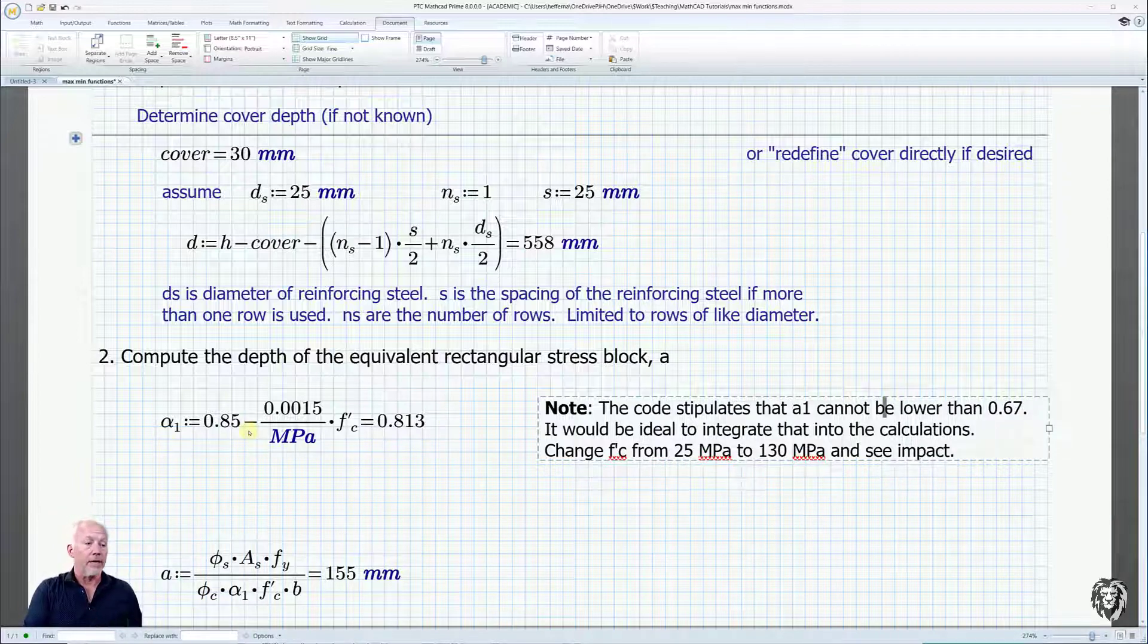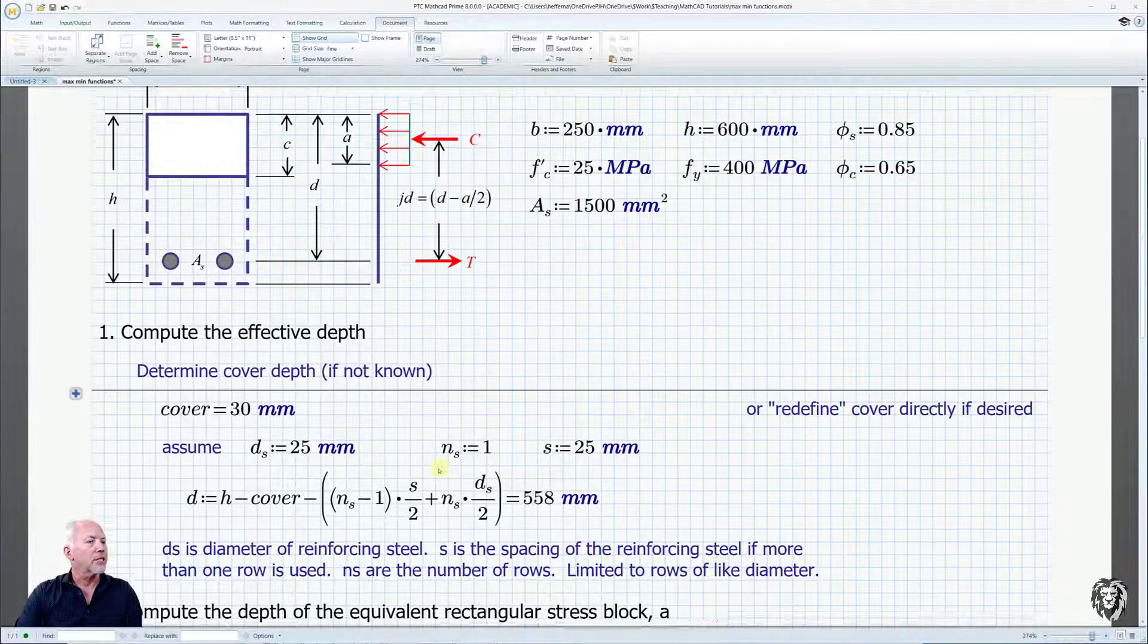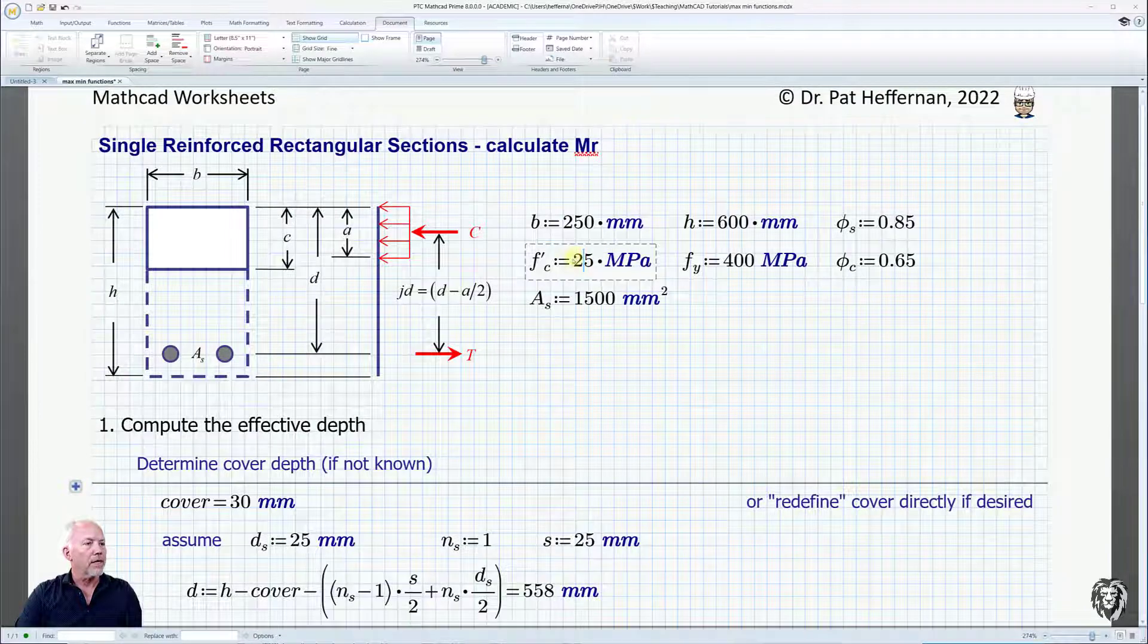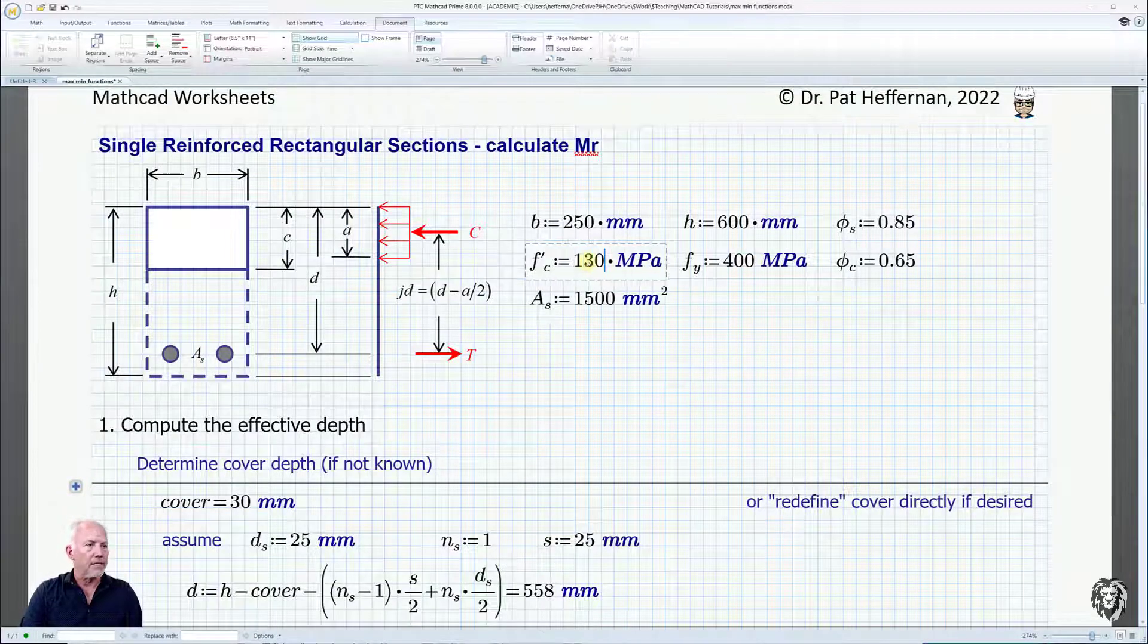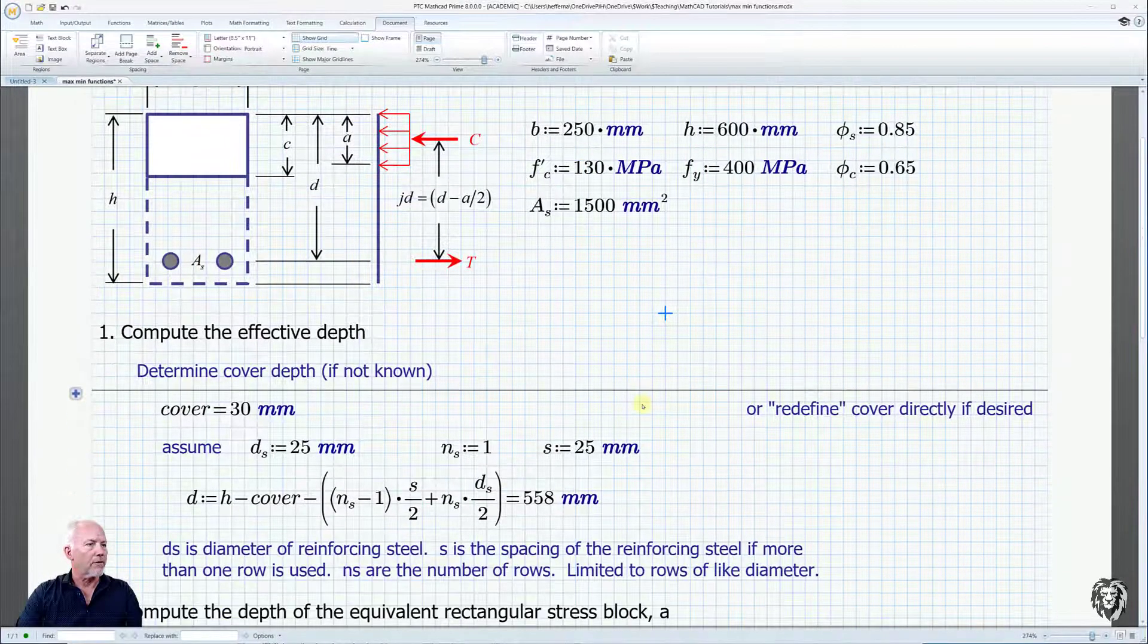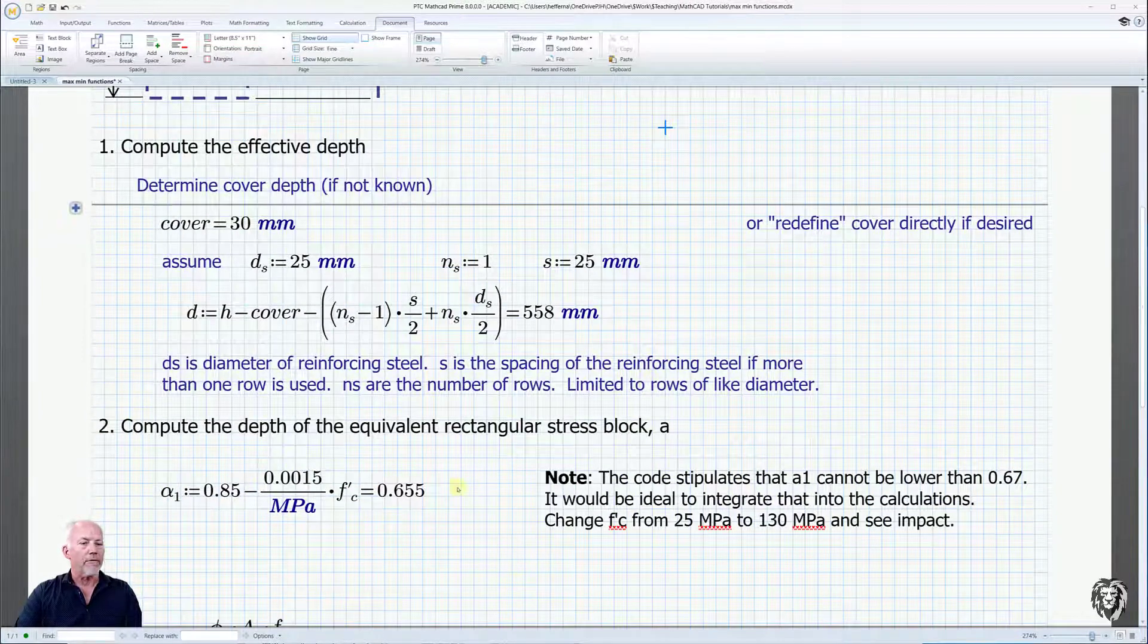because if we were to have a value of f'c, let me go and change my f'c value. Instead of being 25 megapascals, let's say it's very high strength concrete at 130 megapascals and we roll down,